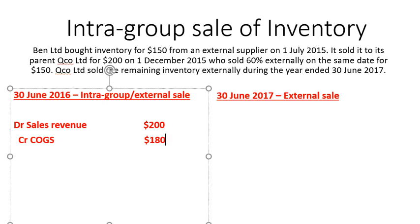The reason it's $180 is because when Ben Ltd sold to Qco Ltd, there was $150 of COGS recognised — this is the original cost. This original cost is what we need to use to calculate the COGS for the sale to the external party. We know we sold 60% of the inventory to the external party, so 60% multiplied by $150 equals $90. So we only want to recognise $90 of COGS. But Ben Ltd recognised $150 of COGS when it sold the inventory to Qco.